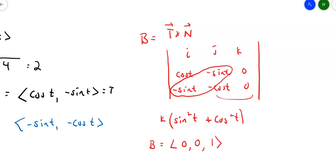The binormal vector is (0, 0, 1). Since the binormal vector sticks out of the x-y plane and is constant — it doesn't change — the torsion, denoted by the Greek letter τ, is 0. The torsion measures how much the binormal vector changes, and since B = (0, 0, 1) is constant, the torsion is 0.